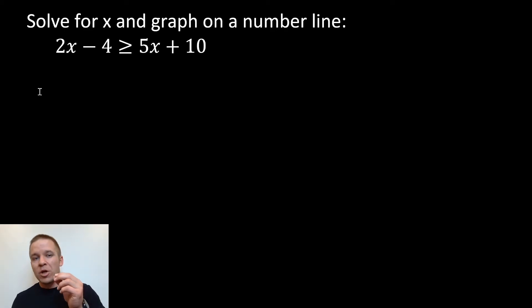Now I have 2x minus 4 is greater than or equal to 5x plus 10. I want to get my x's on my left hand side, my other numbers are going to go to the right hand side. So in order to do that, I'm going to subtract 5x on both sides. Boom. I'll get negative 3x minus 4 is greater than or equal to 10. Right, so it's canceled.